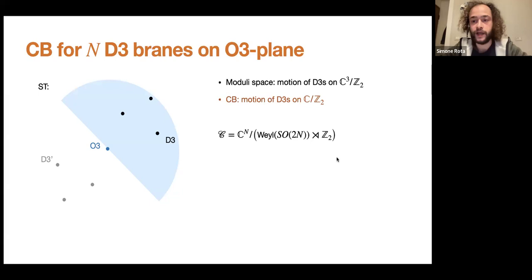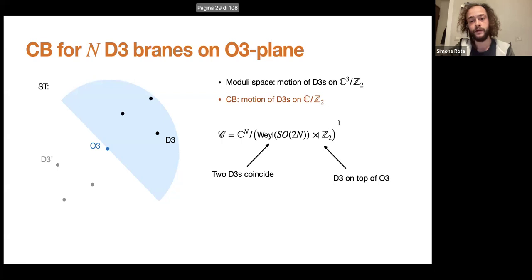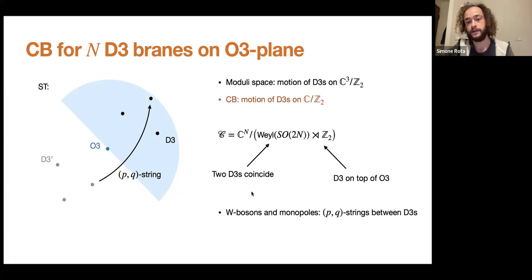At generic rank N, the Coulomb branch is C^N modded by the Weyl group of SO(2N) semi-direct with Z2. This Coulomb branch has a bunch of singularities, and we want to see what happens at each. The singularities coming from the Weyl group correspond to D3-branes on top of each other — here you have non-trivial dynamics, these are two D3-branes coming together in flat space supporting SU(2) N=4. The other singularities come from the Z2 quotient, corresponding to one D3-brane on top of the O-plane, and the answer depends on the specific orientifold.